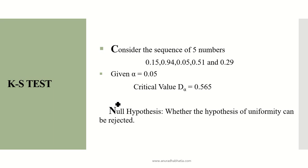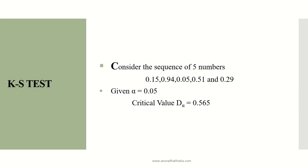Let's start with an example. Consider a sequence of 5 data points: 0.15, 0.94, 0.05, 0.51, and 0.29. The level of significance alpha is 0.05, and the critical value D-alpha is 0.565, which is given. The null hypothesis we need to prove is whether the hypothesis of uniformity can be rejected. If the value of D is less than D-alpha, we accept the null hypothesis and conclude that uniformity can be rejected.